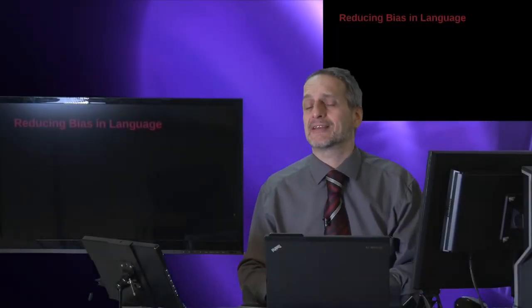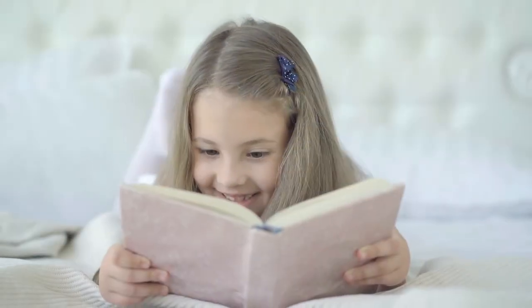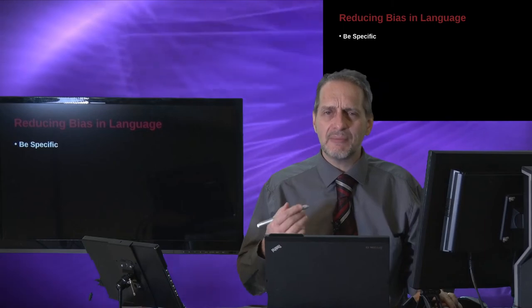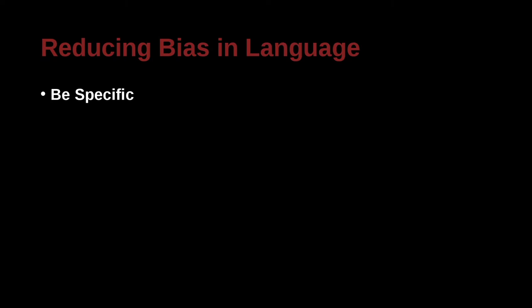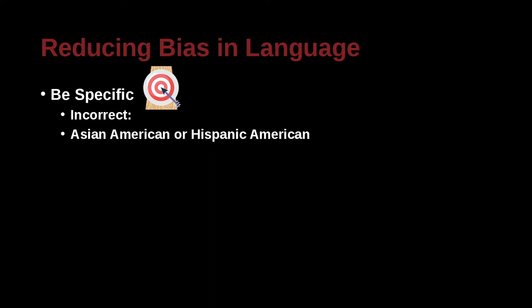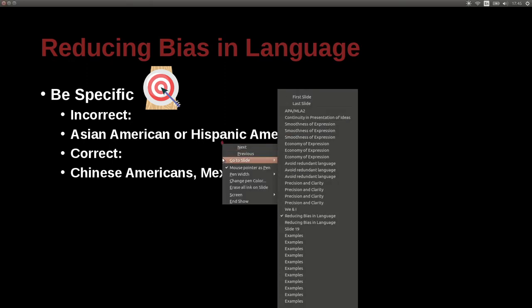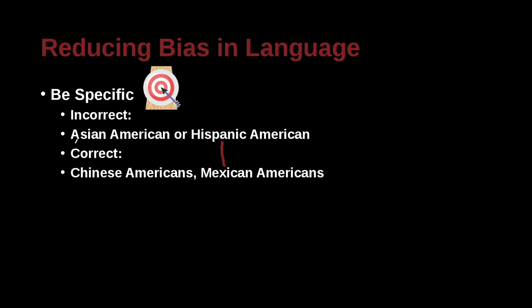Now we're going to move on to a very important topic: bias in language — how to avoid saying things that make us sound like we're against or for someone. You need to be specific. For example, 'Asian Americans or Hispanic Americans' is very general. If we say 'Chinese Americans or Mexican Americans,' that is more specific. The correct examples are more specific.